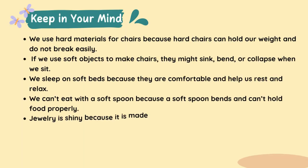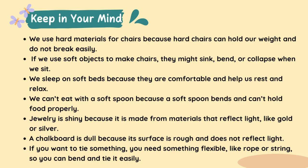Keep in mind that we use hard materials for chairs because hard chairs can hold our weight and do not break easily. If we use soft objects to make chairs, they might sink, bend, or collapse when we sit. We sleep on soft beds because they are comfortable and help us rest and relax. We cannot eat with a soft spoon because a soft spoon bends and can't hold food properly. Jewelry is shiny because it is made from materials that reflect light, like gold or silver. A chalkboard is dull because its surface is rough and does not reflect light. If you want to tie something, you need something flexible, like rope or string, so you can bend and tie it easily.